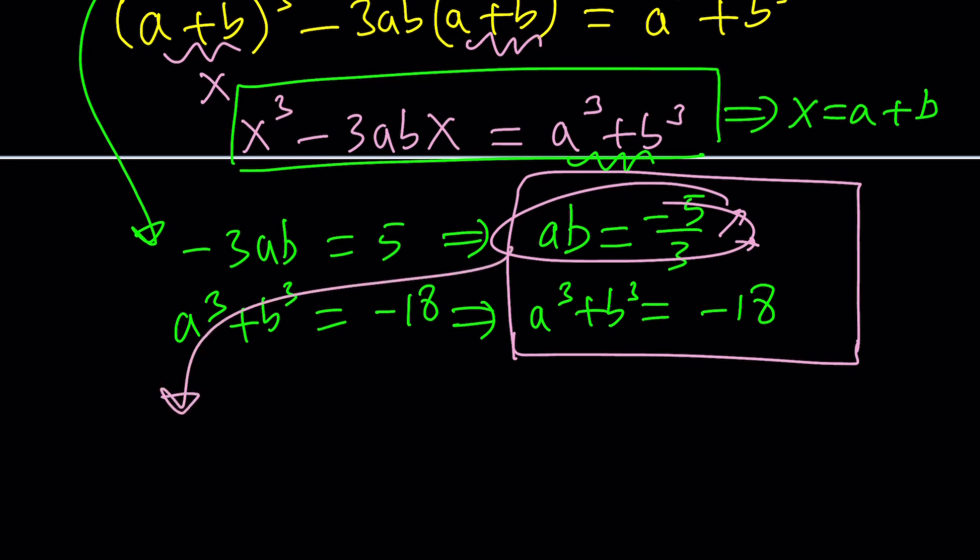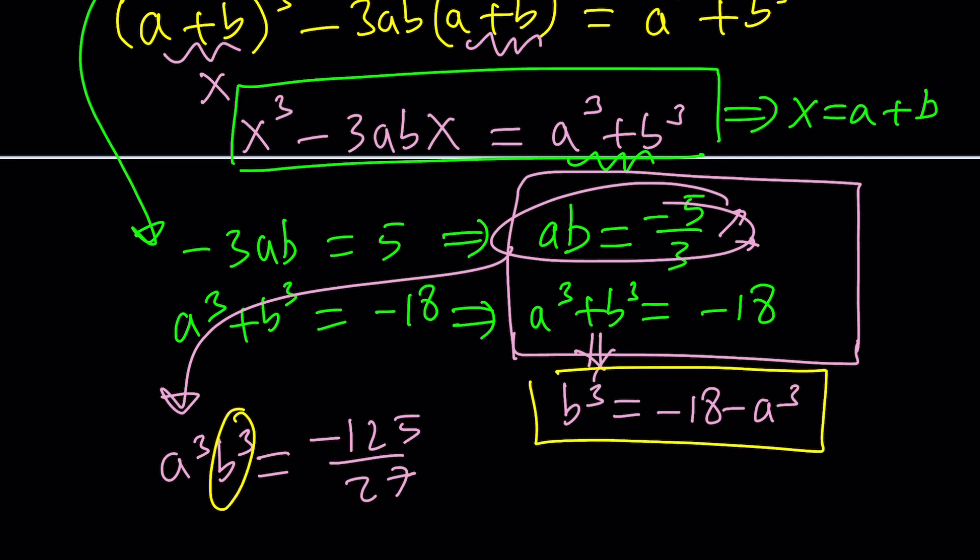That gives me a³ + b³ is equal to -125/27 and then I want to go ahead and from here isolate b³ and write it as -18 - a³ and then I want to take this and use it here. Look at that. Isn't that cool?